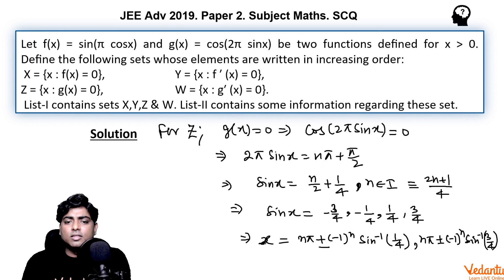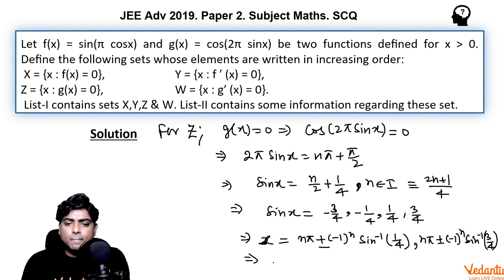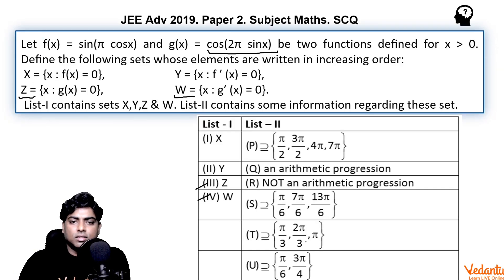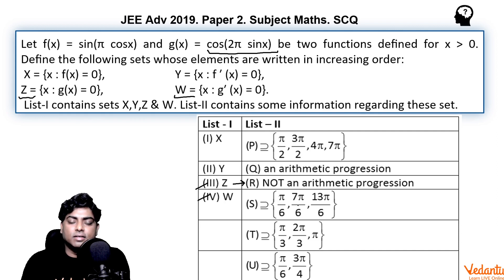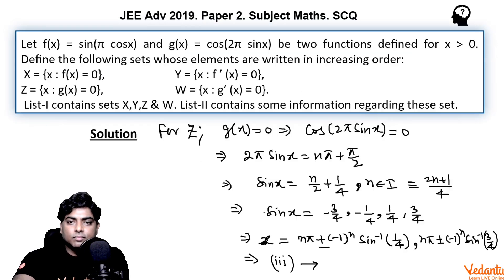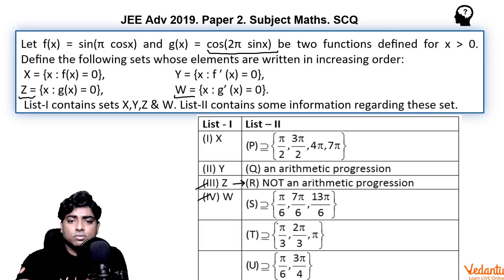Since the angles in set Z are non-trivial and not forming an arithmetic progression, Z matches only with R in List 2. The elements given in entries P, S, T, and U are not subsets of Z. So the third entry (Z) matches only with R.